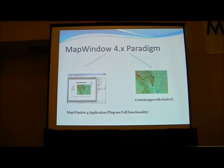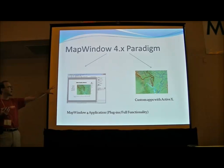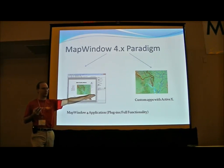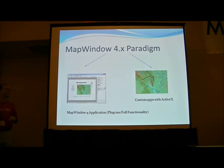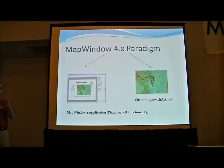The existing paradigm for MapWindows 4.x is: you have an application, you get whatever you can from it, but you're not going to get all the features if you build your own tool. If you want a custom GIS, you can start with the ActiveX control but you'll have to program an awful lot. The benefit of this strategy is people can write plugins that definitely work together because they all target one master application. The disadvantage is you're all stuck with one master application.